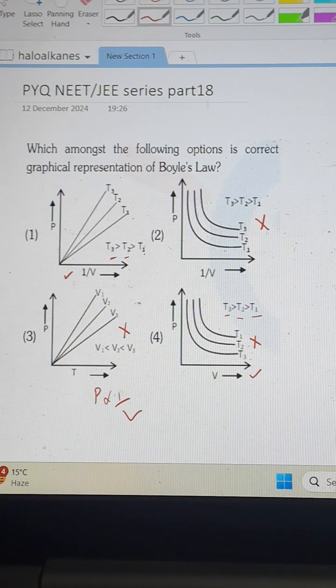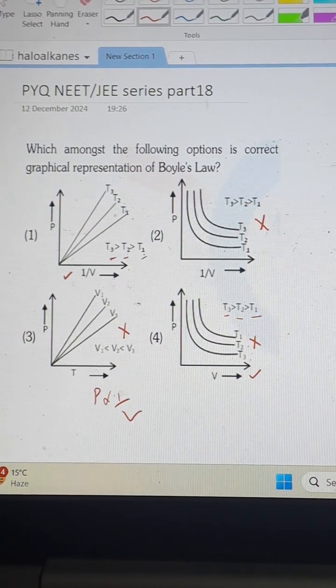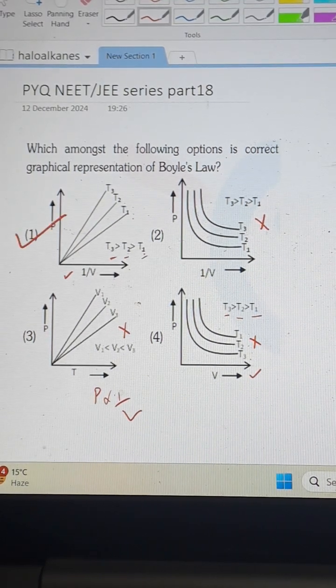But in first option T3, T2, T1, the graph ranges are also correct. So, first one is the correct one.